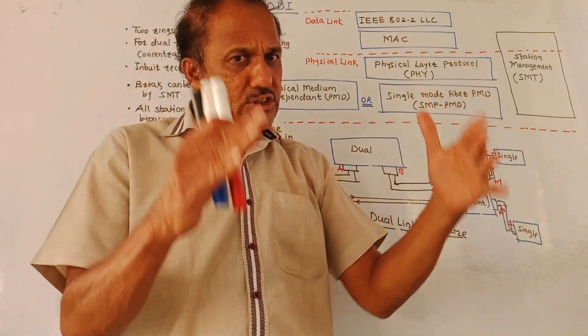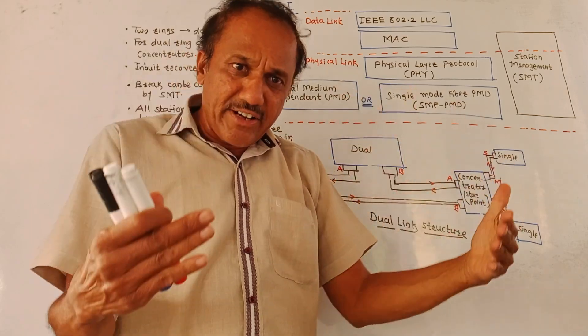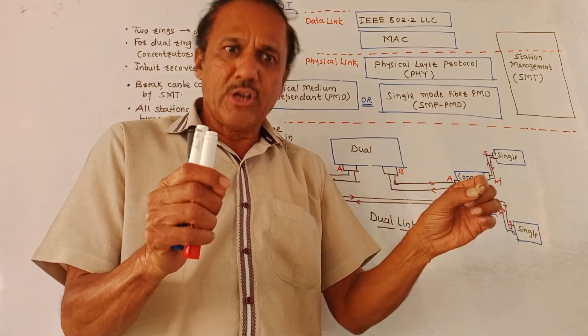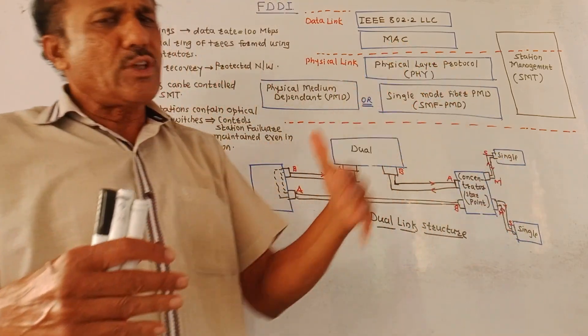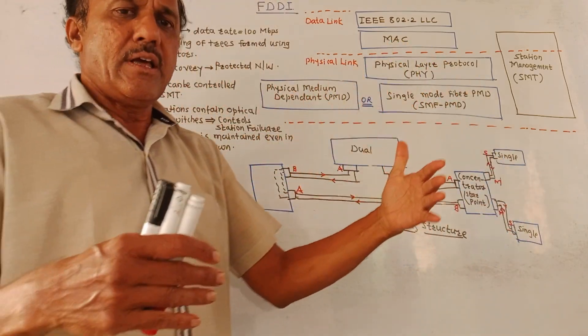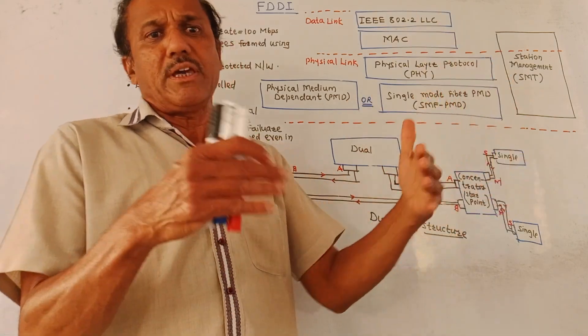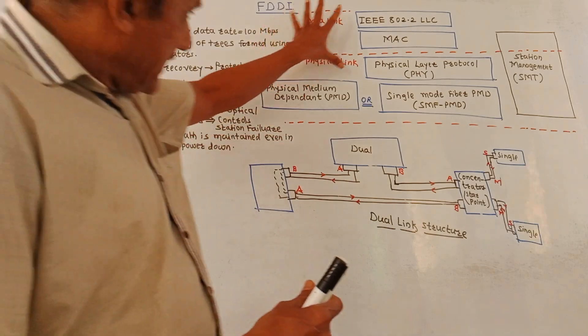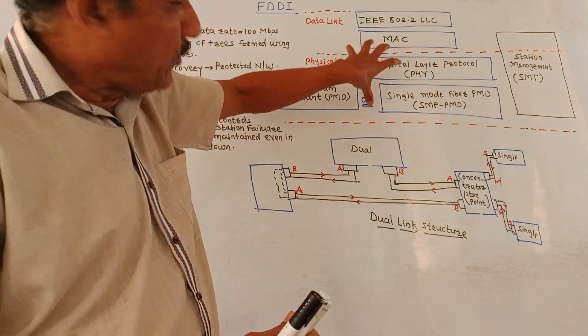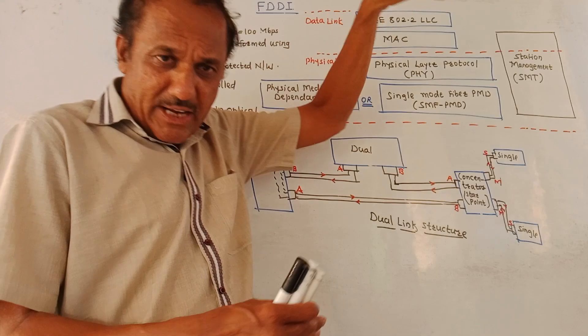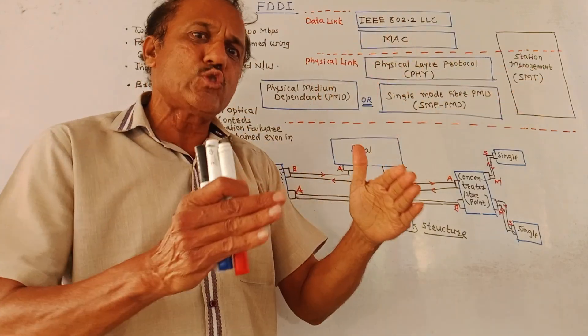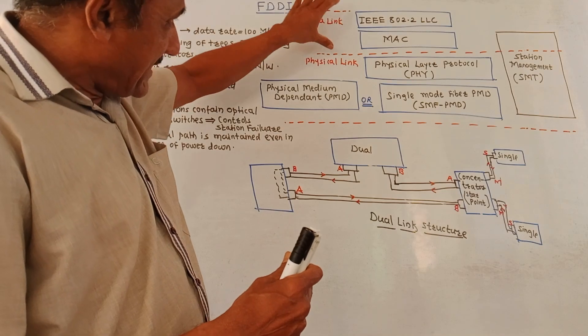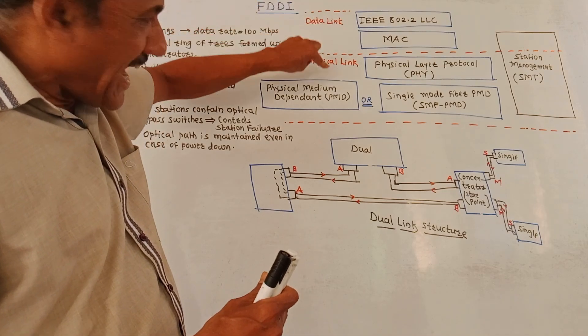This type of interface is used in LAN networks where fiber optic cable is used as a medium to transmit the data. We know that in earlier videos we have studied there are a lot of advantages of making use of the optical cable as a transmitting medium. Now, this diagram shows how this FDDI interface makes use of the OSI model. This interface basically makes use of data link and physical link.